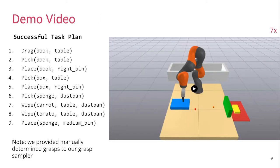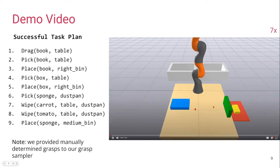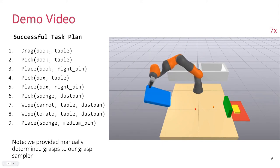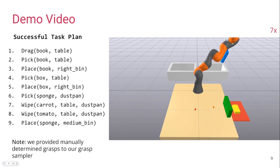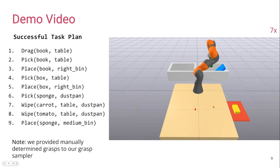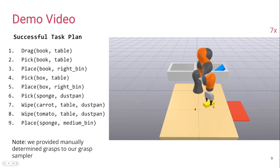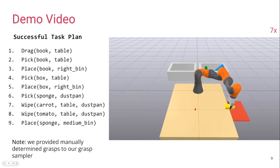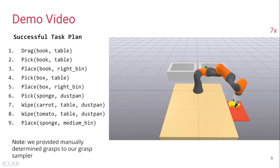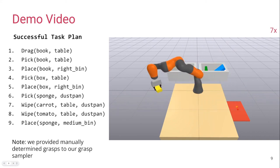We now demonstrate a successful task plan which our system has reasoned about. We firstly use our Cartesian impedance controller to drag the book across the table — note that it is blocking the red tomato from being wiped. We then pick and place the green box, which is also blocking objects from being wiped into the red dustpan. After placing the green box, we pick up the sponge and begin wiping. We wipe the orange carrot from the table to the dustpan, and then the red tomato. Once we have successfully wiped all the objects, we return the sponge into the bin on the left.